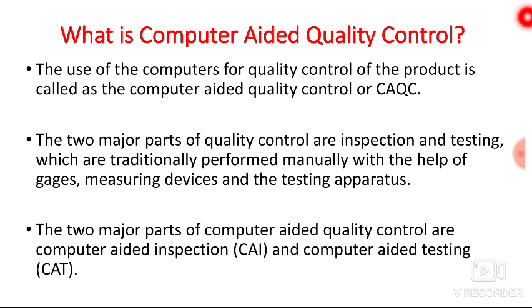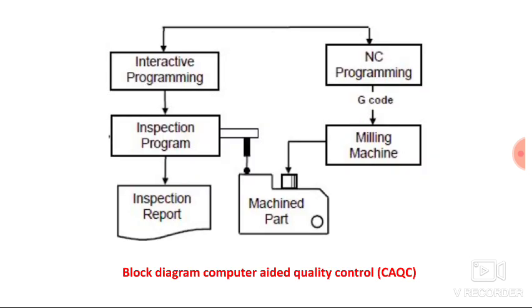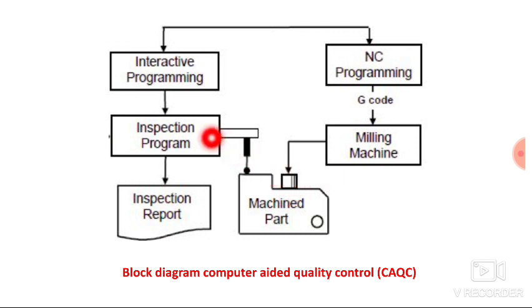These two functions — inspection and testing — which were previously done manually, are now done with the help of computers and hence are known as computer-aided inspection and computer-aided testing. With this block diagram you can understand computer-aided quality control: a machine part is produced by a CNC milling machine using NC programming, and after producing the part it is inspected by the inspection program.